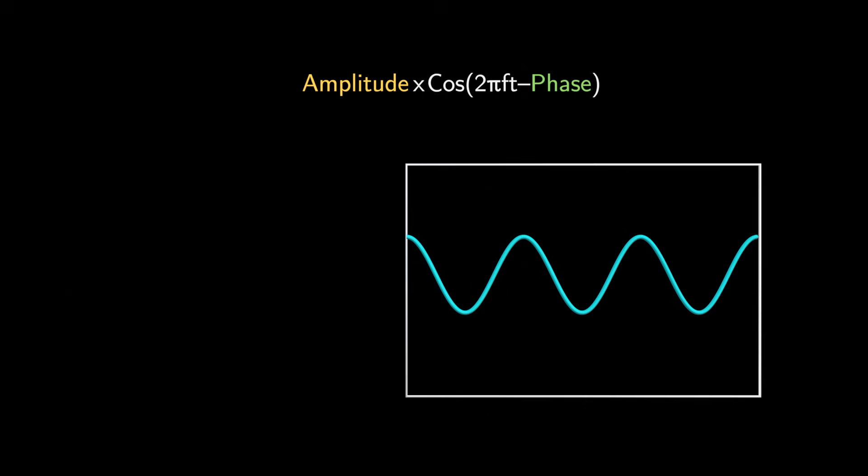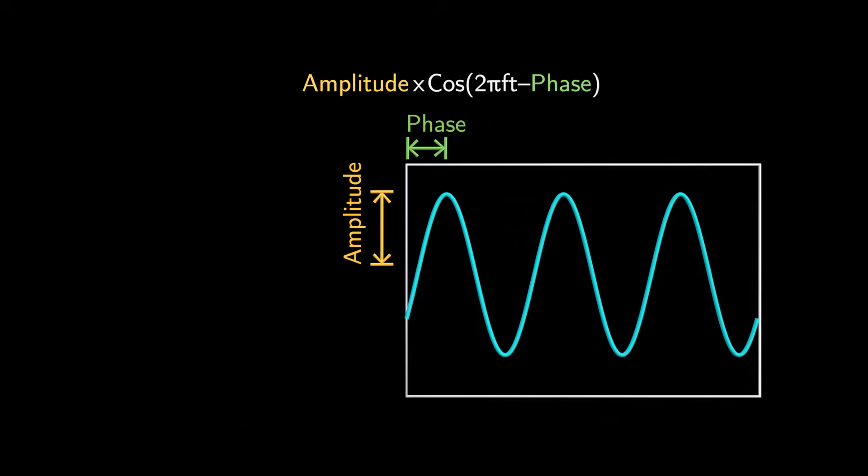QAM is a modulation technique that encodes information into both the amplitude and phase of a carrier wave. Any cosine wave with frequency f can be represented as a point on a constellation diagram, much like a vector.